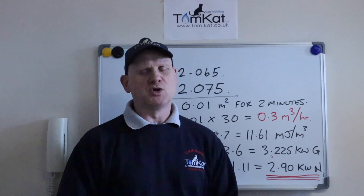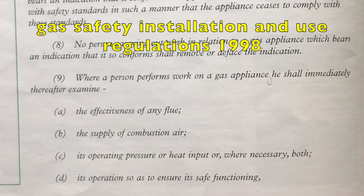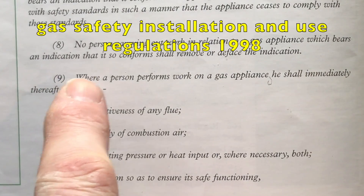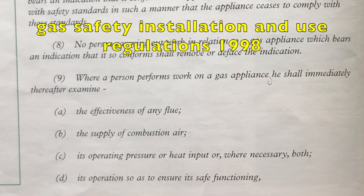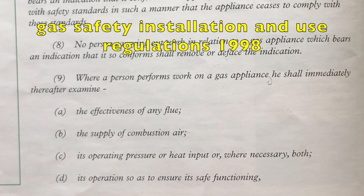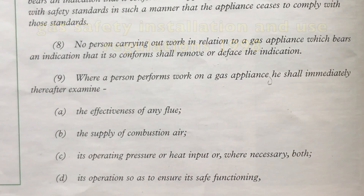Remember, gas rating is a part of Regulation 26-9. Where a person performs work on a gas appliance, he or she shall immediately thereafter examine the effectiveness of any flue, the supply of combustion air, its operating pressure or heat input, or where necessary both, and its operation so as to ensure its safe functioning and that it's not affected by any other appliance. That's what we're checking according to Regulation 26-9 every time we do some work on a gas appliance.